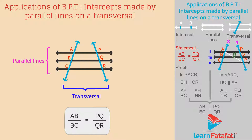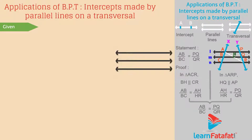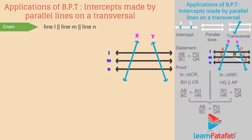Let us prove this statement. Given: Consider there are three lines L, M, and N such that line L is parallel to line M is parallel to line N. Also consider there are two transversals x and y intersecting the parallel lines at points A, B, C and P, Q, R respectively.